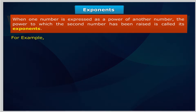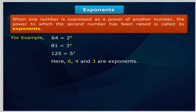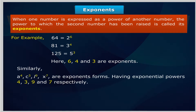For example: 64 equals 2 to the power 6; 81 equals 3 to the power 4; 125 equals 5 cubed. Here, 6 and 4 are exponents. Similarly, A to the power 4, C cubed, L to the power 9, X to the power 7 are in exponential form, having exponents 4, 3, 9, and 7 respectively.